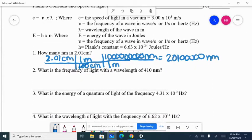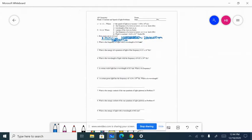So let's go to problems. What is the frequency of light with a wavelength of 410 nanometers? So I'm going to go up here, and I'm going to see frequency is this variable.